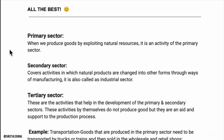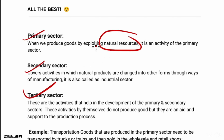In sectors of the Indian economy, we have three sectors: primary, secondary, and tertiary. The primary sector is the one that directly uses nature's resources — like doing farming, fishing — anything where you are dealing directly with nature is the primary sector.